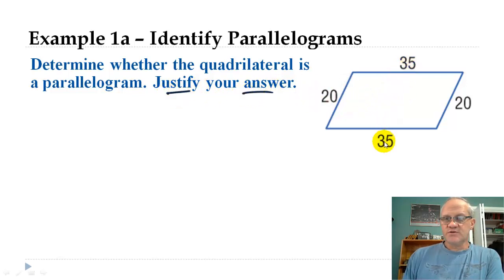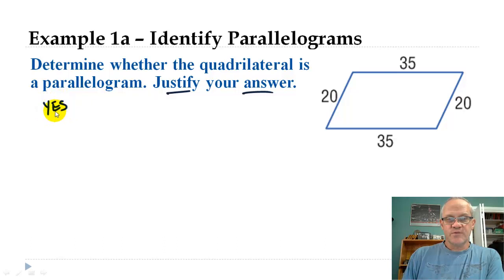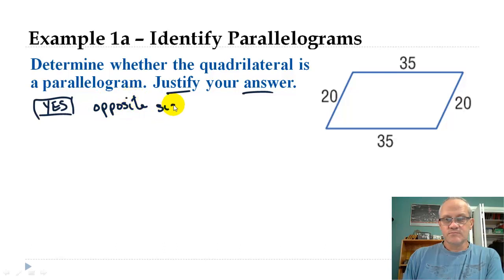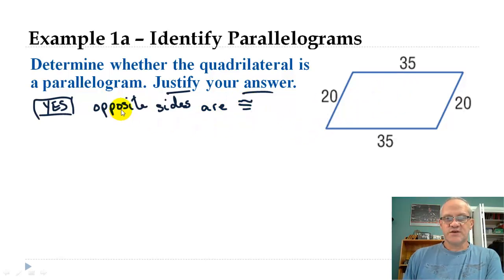If we look at this, we have 35 and 35, 20 and 20. Those are opposite sides and they're congruent. So we can say yes, this is a parallelogram because the opposite sides are congruent. That's our justification — we know the opposite sides are congruent.